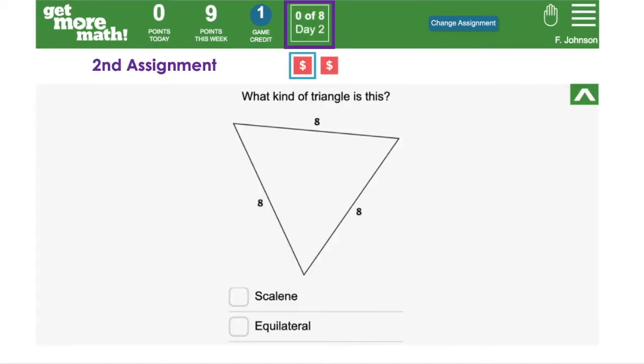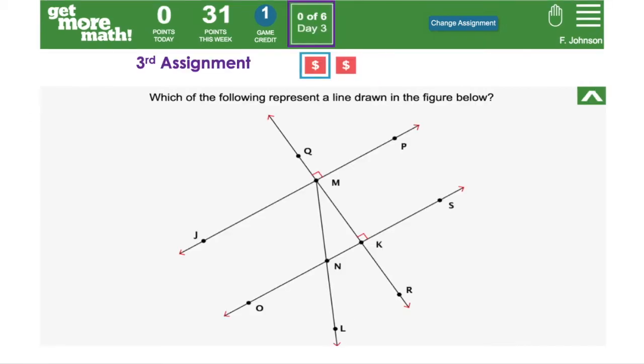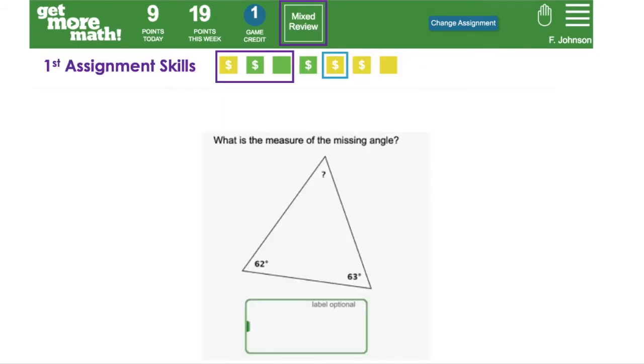When you give the second assignment and include two new skills, your students finish that assignment, transition to mixed review, where they'll have those skills from the first assignment and the skills from the second assignment. After giving the third assignment with two new skills, when your students finish that assignment and transition to mixed review, they'll have the skills from the first assignment, the second assignment, and the third assignment in mixed review.